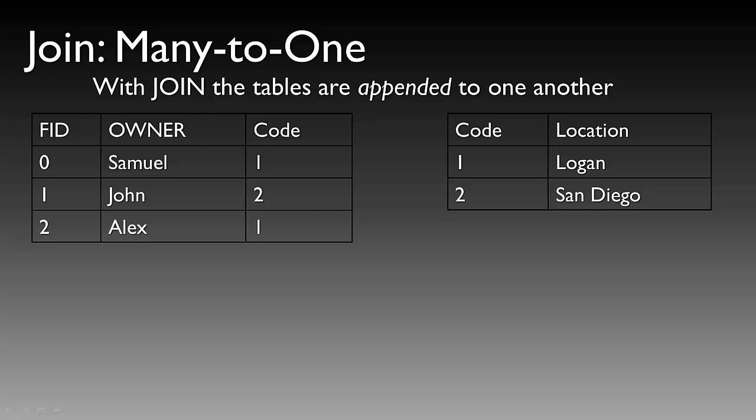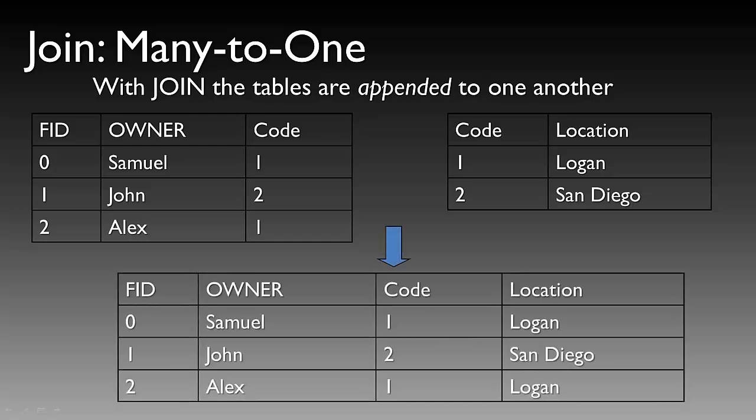In a many-to-one join, tables are again appended to one another. On the left, we now have Samuel, John, and Alex, along with our code field. On the right, we have code and location. The many-to-one join takes the owners and joins them to their locations, where many owners can share one location. The result is that Samuel and Alex are both located in Logan, whereas John is located in San Diego.